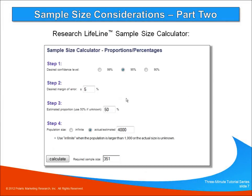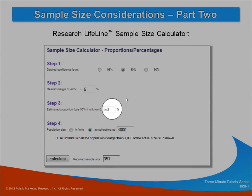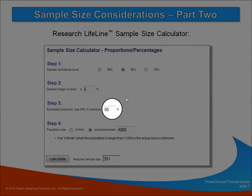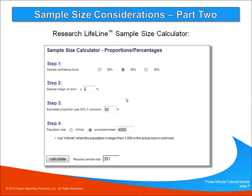This is a screenshot of the actual sample size calculator that you'll find in the Help Center on Research Lifeline. In this example, I used a 95% confidence rate, a 5% desired margin of error, a 50% estimate of the proportion, and a population estimate of 4,000.